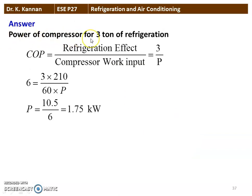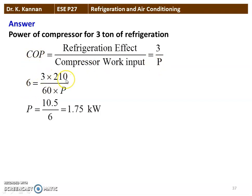The power of the compressor motor for 3/10 ton of refrigeration. COP is defined as refrigeration effect divided by the compressor work input. The refrigeration effect is given as 3/10 ton, so 3/10 into 210 kilojoules per minute divided by 60 into power equals 6. Rearranging, power equals 10.5 divided by 6, equal to 1.75 kilowatts. That is the answer to the question.